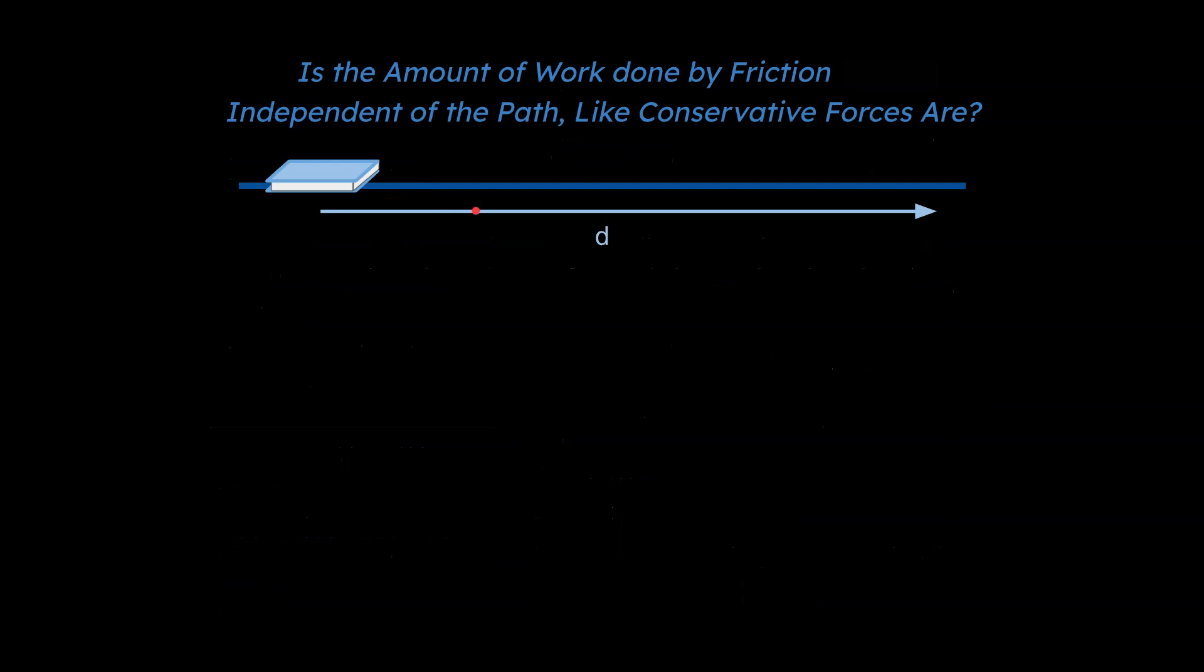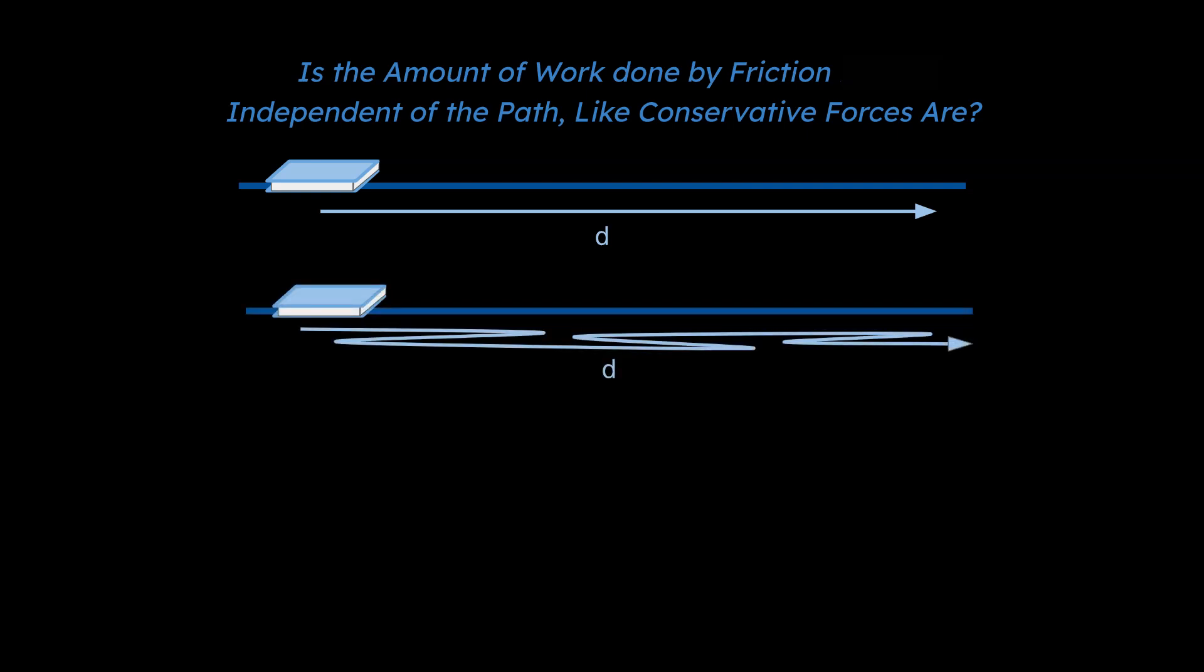All right, so let's think about two other examples here, and these are going to be more of a conceptual example. Let's say you had a book on a table, and you were going to apply a force, and it slid across the table. And the question is, is the amount of work done by friction independent of the path like conservative forces are? So if you think about it, you've got a certain amount of friction that would be created if you just push a book across a desk. Obviously, there's more to that we could say, like what's the angle at which you're pushing across the desk? What's the coefficient of kinetic friction and so on? Yes, there's more to it than that, but let's go ahead and see what else we could say.